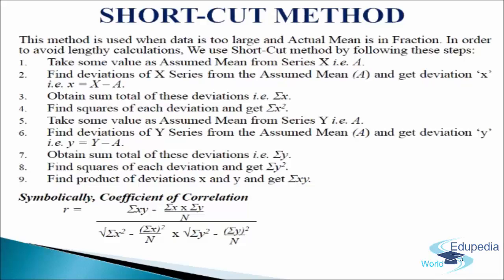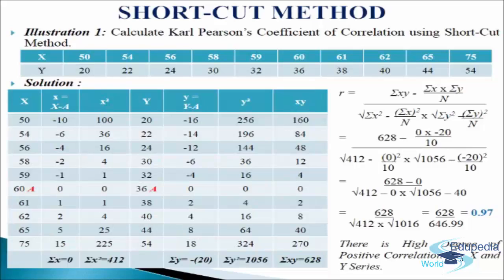So this is the formula we will apply to find out the coefficient of correlation in shortcut method. Let us understand the shortcut method with the help of the following illustration. We have taken the same data as we have taken in illustration 1, so we will start with the solution.